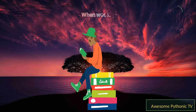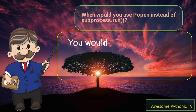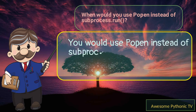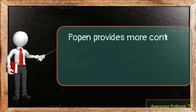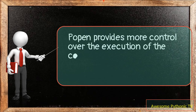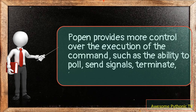You would use Popen instead of subprocess.run for more advanced use cases that run cannot handle. Popen provides more control over the execution of the command, such as the ability to poll, send signals, terminate, and wait for the subprocess.